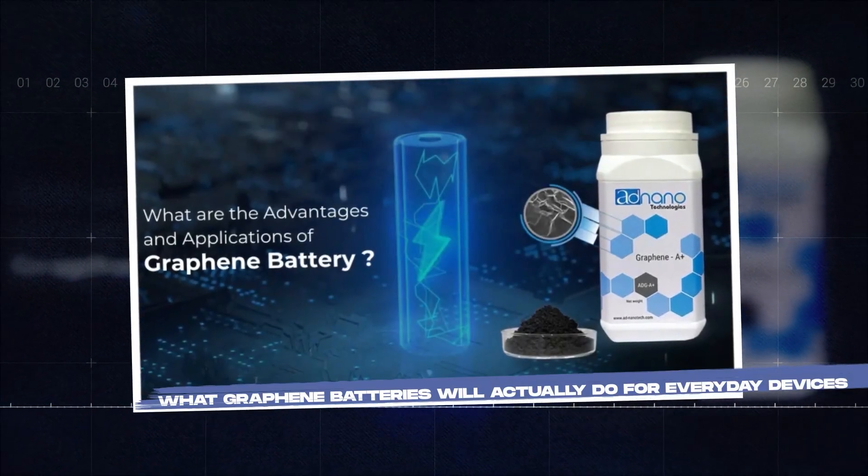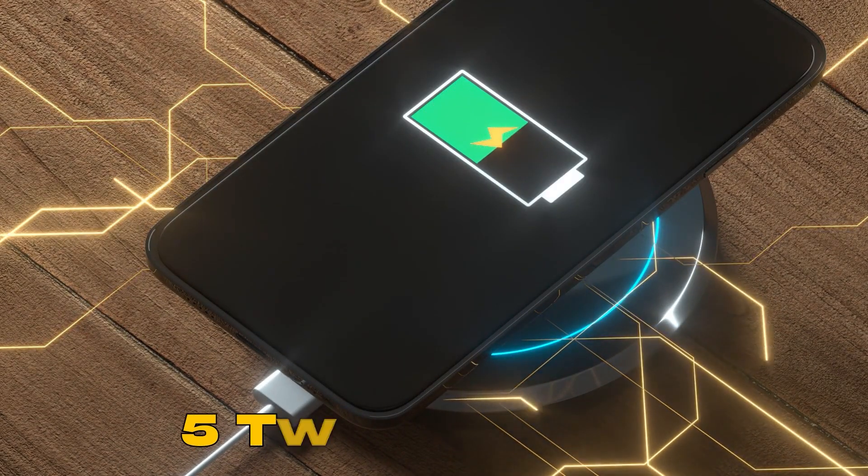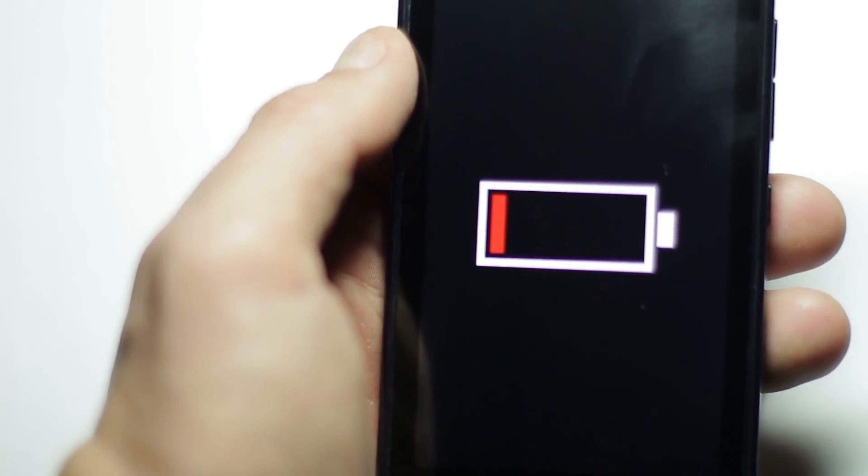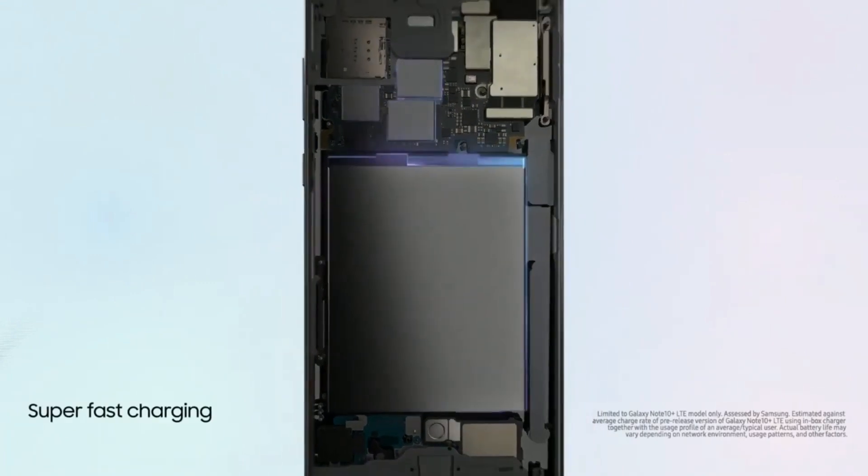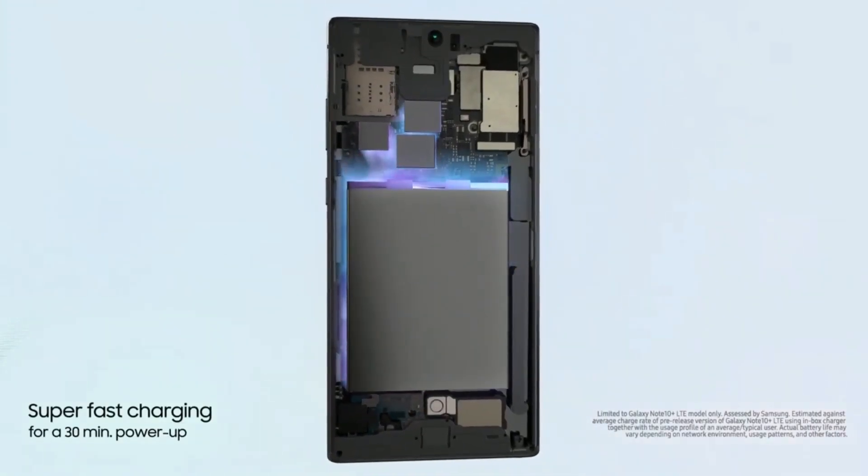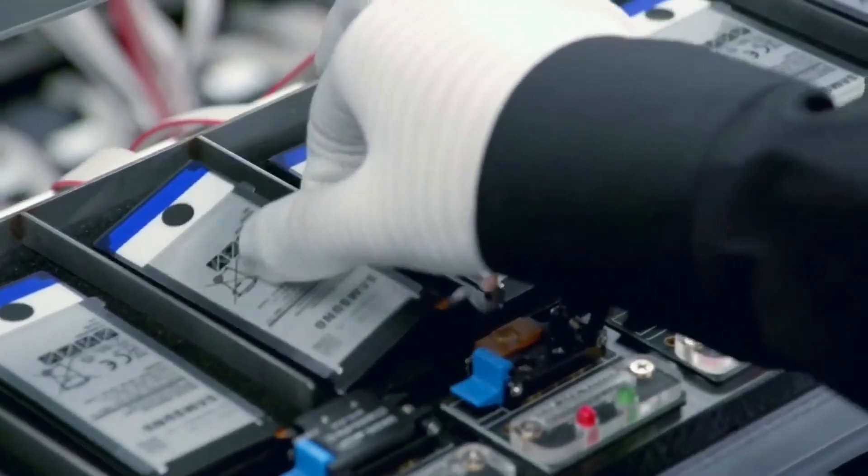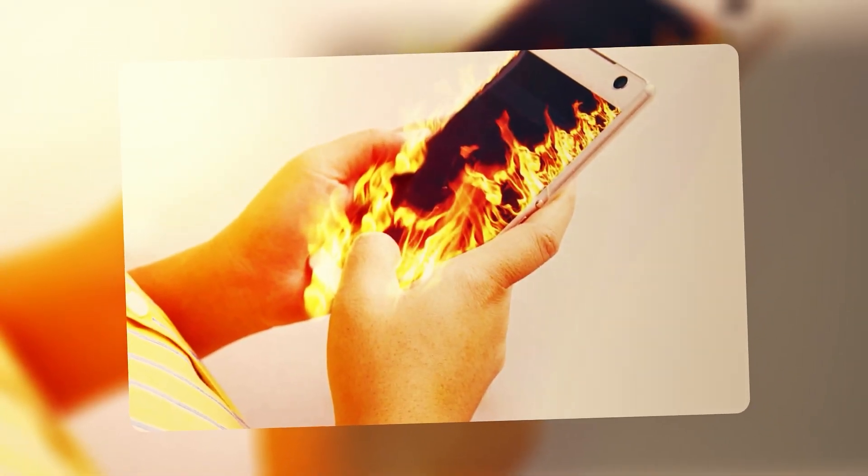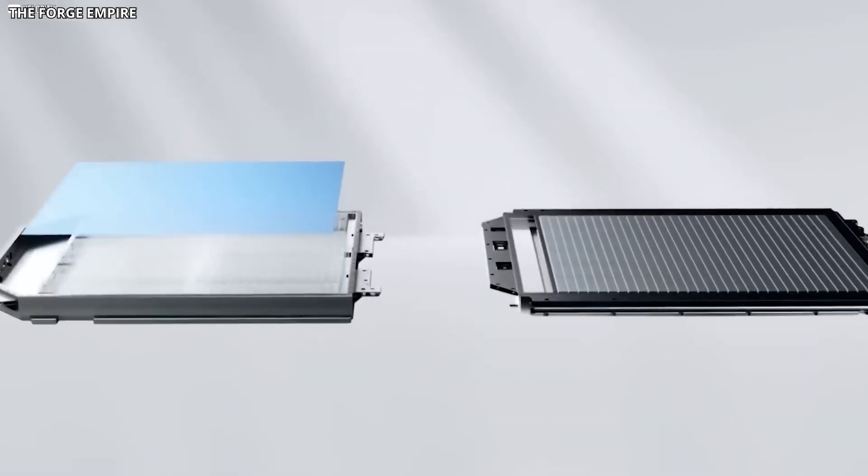What graphene batteries will actually do for everyday devices. For your phone, the difference will be charging speed. Instead of plugging in for an hour, you could fully charge in 5 to 10 minutes. That changes how you think about battery life. You wouldn't need to worry as much about running out during the day because topping up would be nearly instant. Battery lifespan would also improve. Current lithium-ion cells degrade after a few hundred charge cycles, losing capacity over time. Graphene-enhanced batteries can handle several thousand cycles with minimal degradation, meaning your phone's battery would last much longer before needing replacement. Heat is another factor. Phones get warm during heavy use or fast charging, which shortens battery life and can throttle performance. Graphene dissipates heat better, keeping the device cooler and allowing it to maintain peak performance longer.